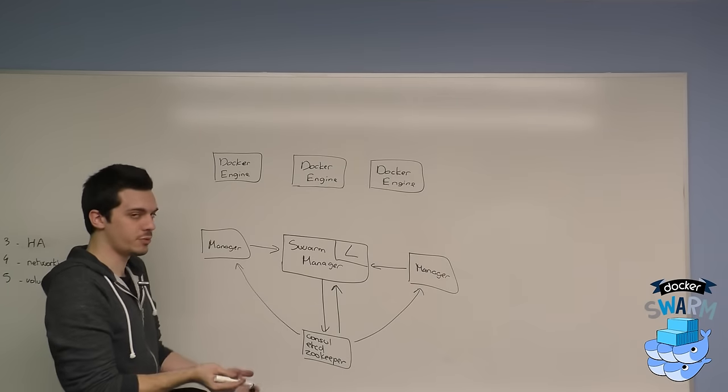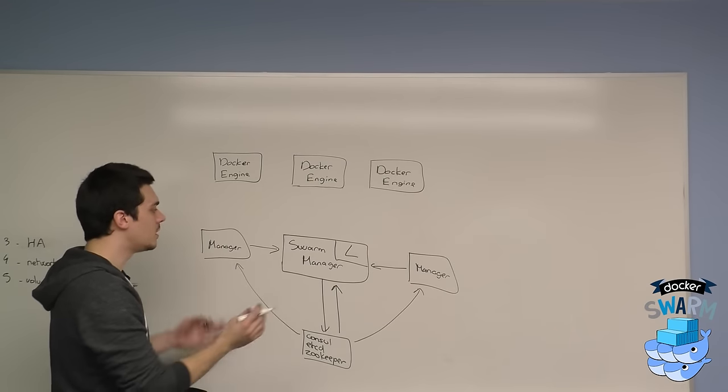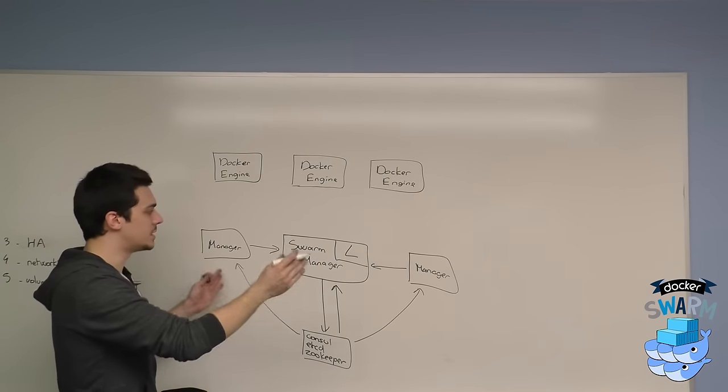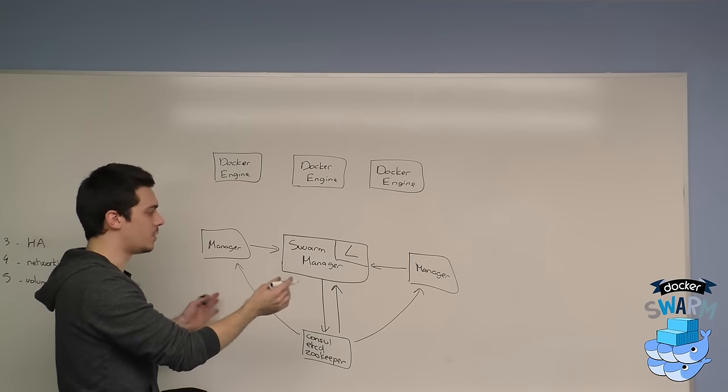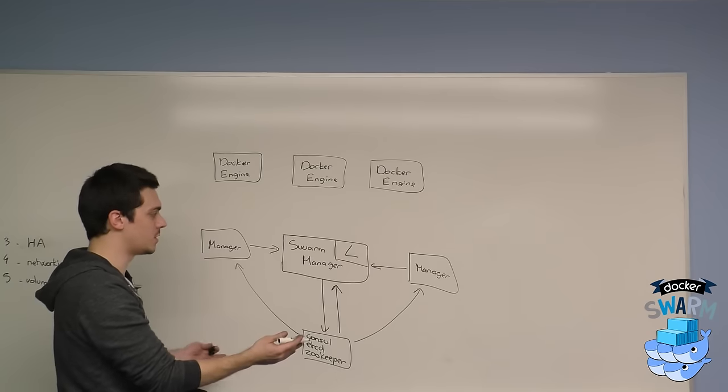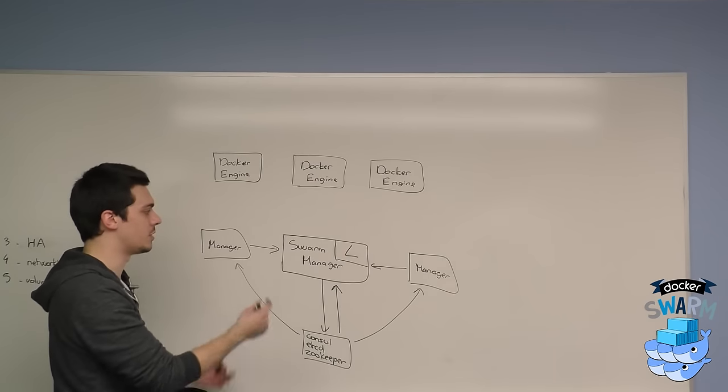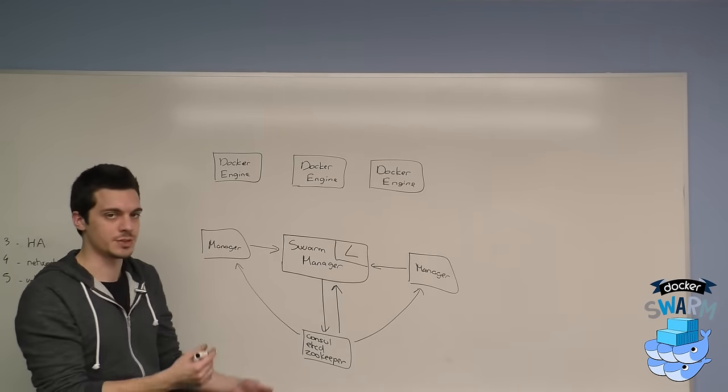This is to make sure that you have a single source of truth and that maybe some disconnected state won't impact how the cluster works and make sure that everything works fine for the scheduling decisions, for example, and all the constraints with affinities, resources, etc.